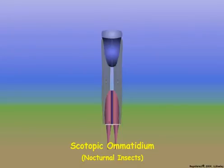except that scotopic omatidia appear to have an open space, referred to as the clear zone, between the crystalline cone and the retinula cells. The clear zone actually contains transparent crystalline tracts that arise from the retinula cells and extend to the crystalline cone.